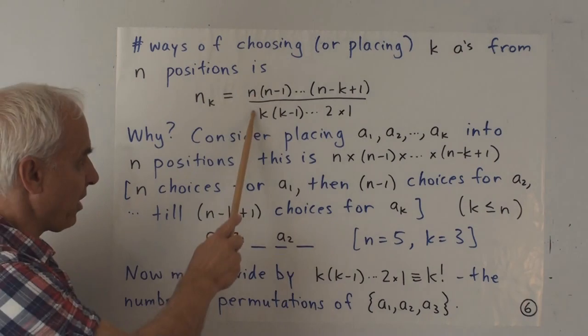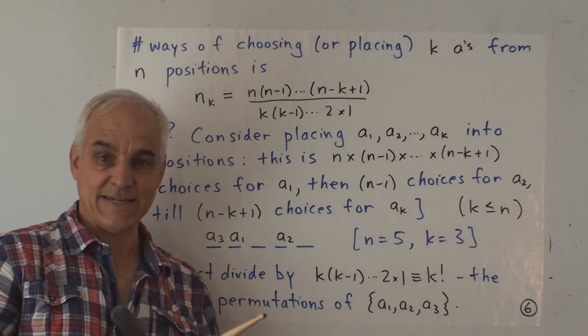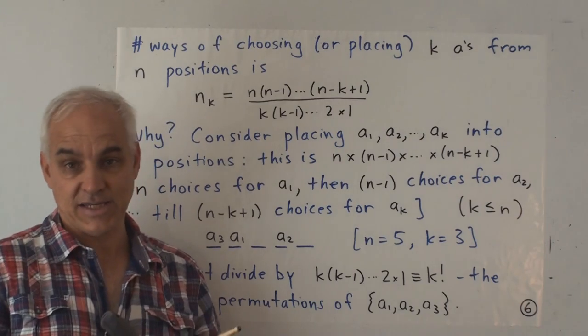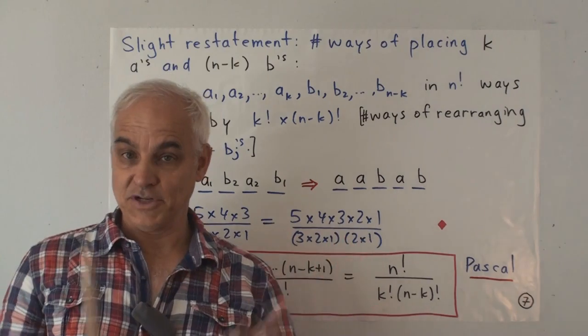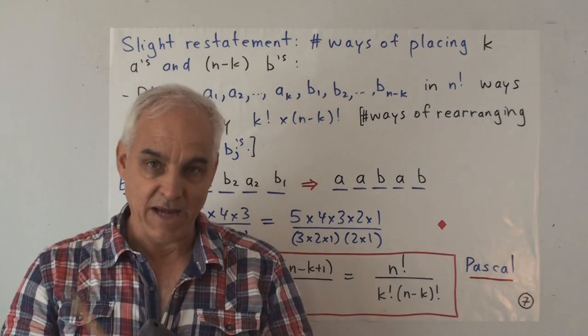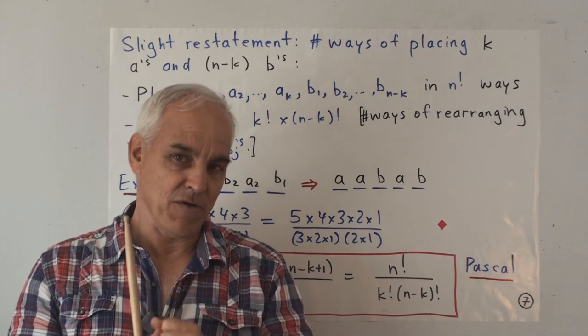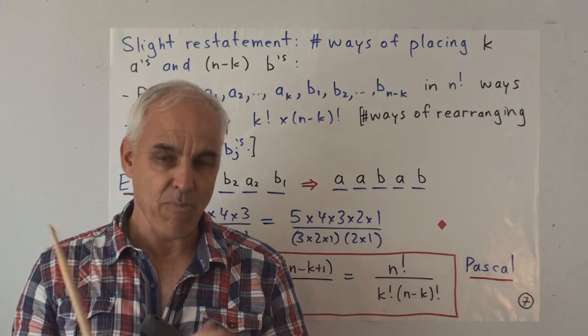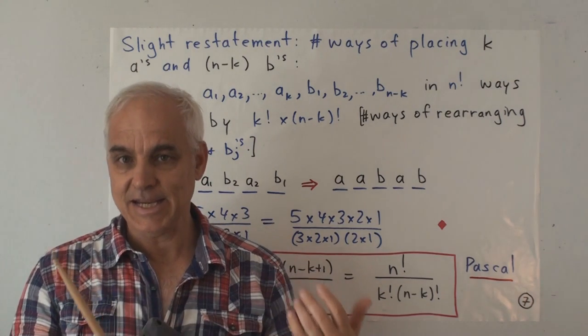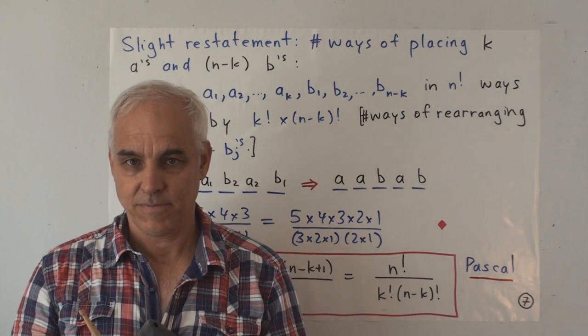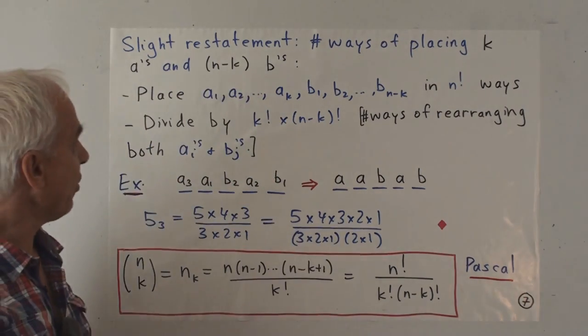So that's where we're getting this formula for the number of ways of choosing or placing k objects into n places. So I realize that this argument that I've just given you will be familiar to many of you. And this is more evidence of the importance of this problem. The problem is so important that almost all students of mathematics see this at some point.